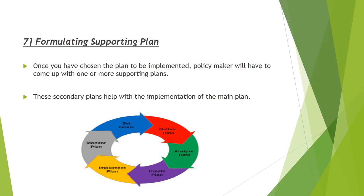The seventh step is formulating supporting plans. Once the main plan has been chosen, the policymaker will need to develop secondary supporting plans. These secondary plans help with the implementation of the main plan — for example, plans to hire more people, train personnel, or expand the office. All these secondary plans are in fact part of the main plan.